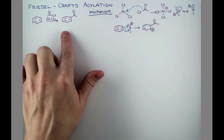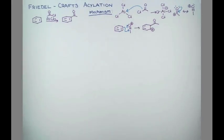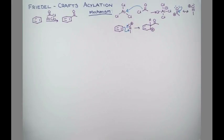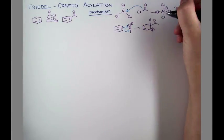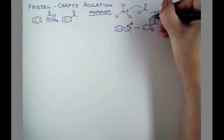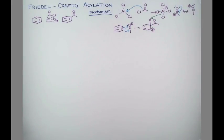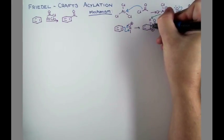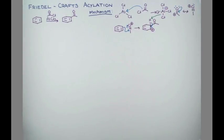Now to get to our final product, all that's left is a deprotonation. Although you'll sometimes see this shown as a spontaneous process with loss of H+, probably the best way to draw this is to show a chlorine dissociating from the aluminum complex, deprotonating, making the compound aromatic, and producing a molecule of HCl.